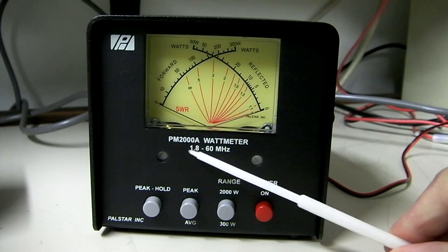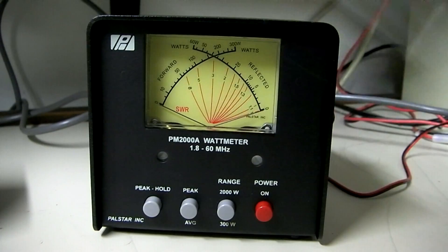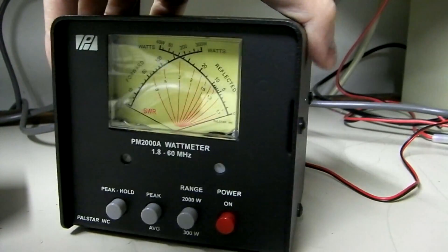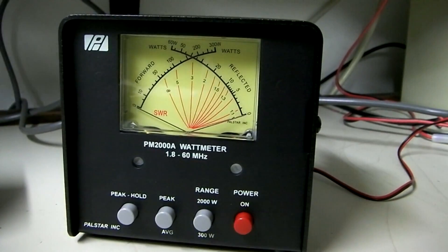As you can see, this meter is for 1.8 to 60 megahertz, so this is an HF-type meter, and it's popular with also ham radio guys, as well as the CB crowd. It's got a very durable case to it, and what I'll do is I'll flip it around and show you the back.